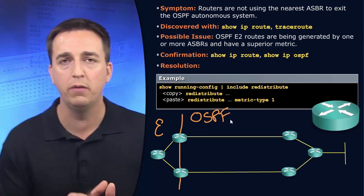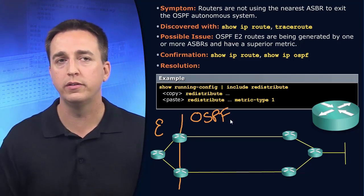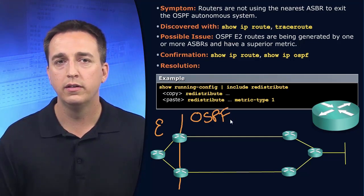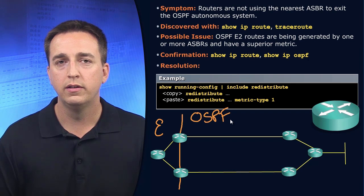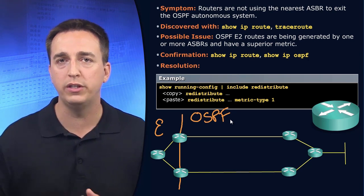So we're redistributing on both those routers. What is going to happen in this particular case?